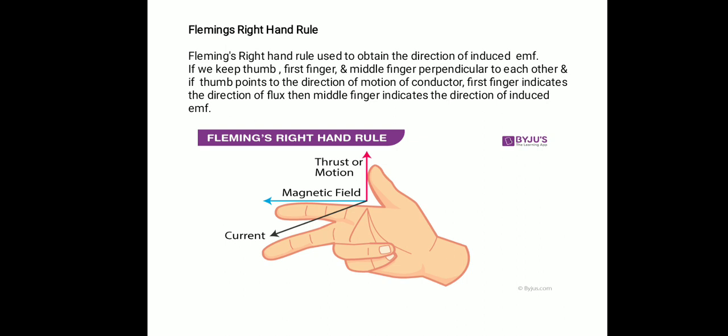With Fleming's right hand rule: if we keep the first three fingers of the right hand perpendicular to each other — thumb, first finger, and middle finger — and if the thumb indicates the direction of motion of the conductor, and the first finger indicates the direction of the magnetic flux lines, then the middle finger indicates the direction of the current. With the help of Fleming's right hand rule, we can determine the direction of current if we know the direction of motion of the conductor and the direction of flux lines.